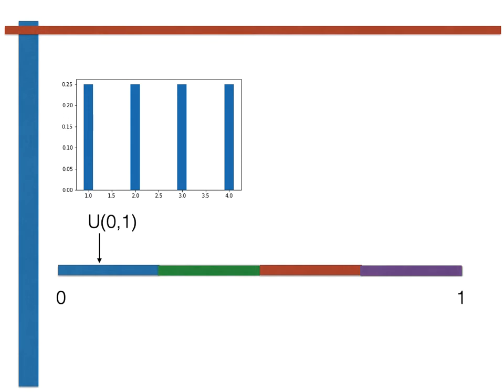If this uniform random variable falls within the blue segment of the line, we return 1 as the value of our uniform discrete random variable. If the uniform continuous random variable falls within the green section of the line, we return 2.